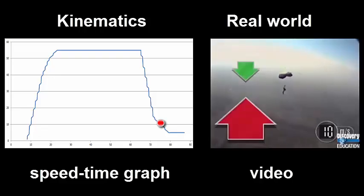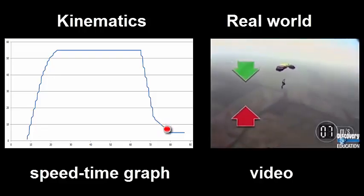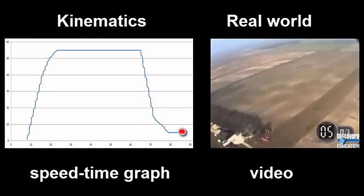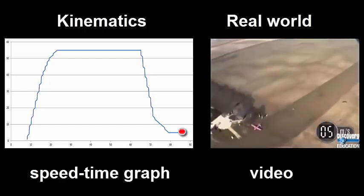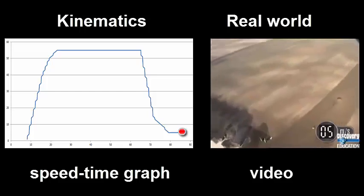Because she's slowing down, air resistance decreases until it balances gravity again and she reaches a much slower constant speed. Approaching the ground at five meters per second is a much better idea.